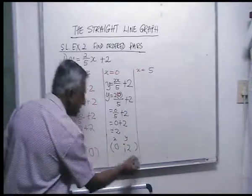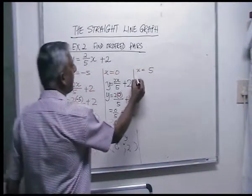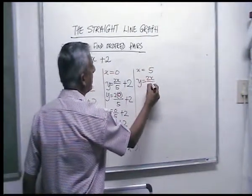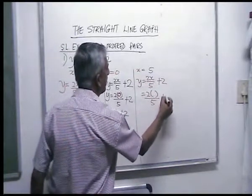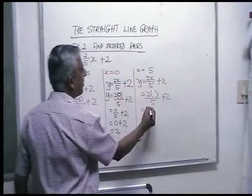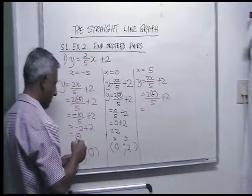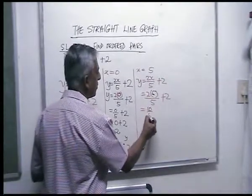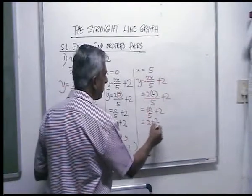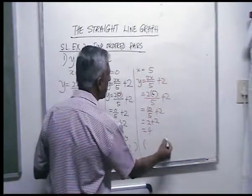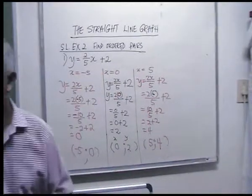For x is five: two times five is ten, over five plus two. Ten divided by five is two, two plus two is four. Your ordered pair is x is five, y is four. You must be able to handle fractions.